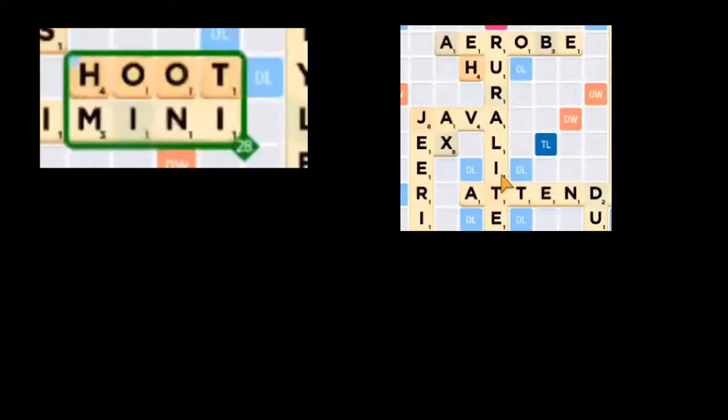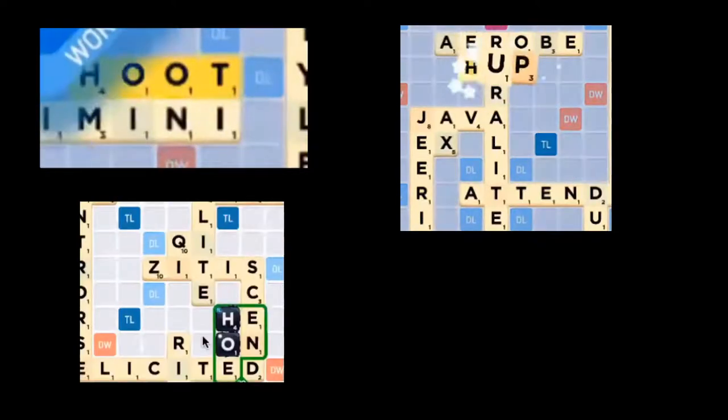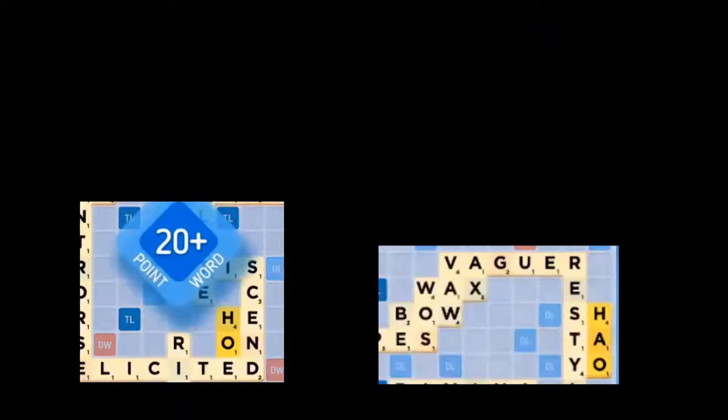A tile that scores four points and boasts extremely strong representation in two-letter words is a great start for a scoring tile, but the H is also a passable bingo tile as well.